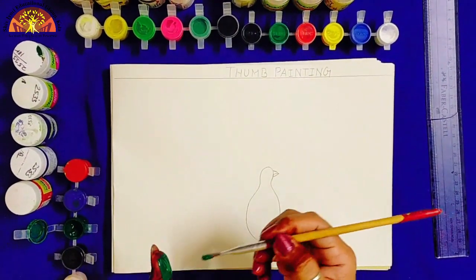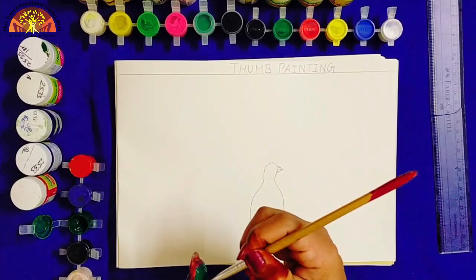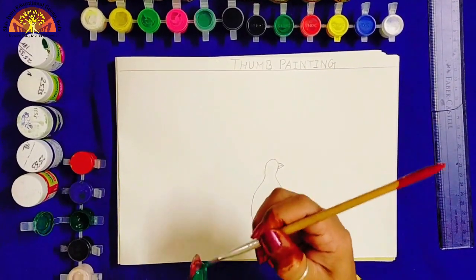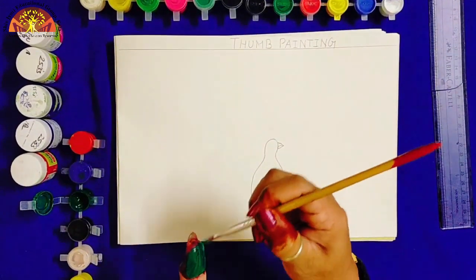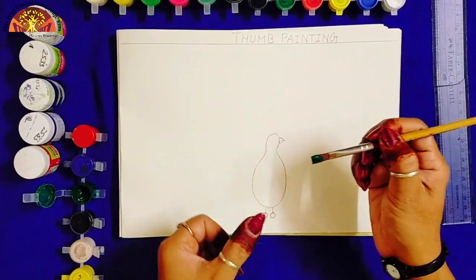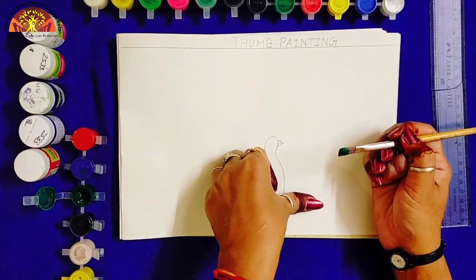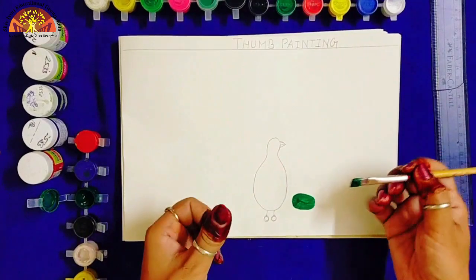Now we will take green color and put this thumb on the brush. And press it like this.